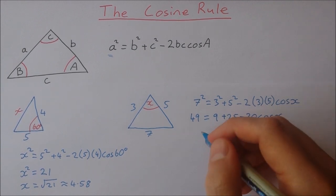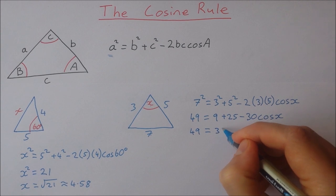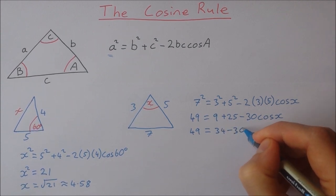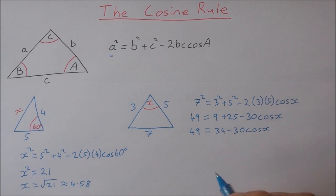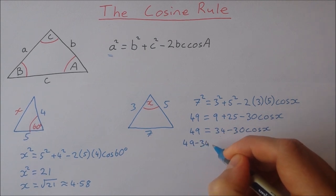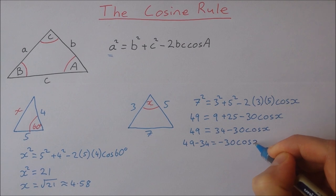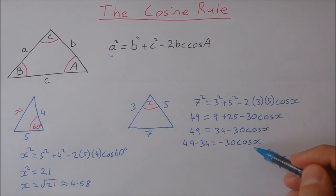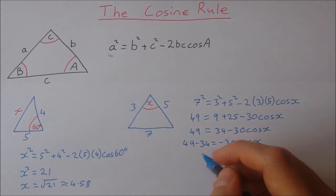Okay so 9 and 25 is equal to 34. I'm going to take 34 from both sides. So 49 minus 34. And you can see I'm working to get this cosine x on its own. 49 minus 34 gives us 15.